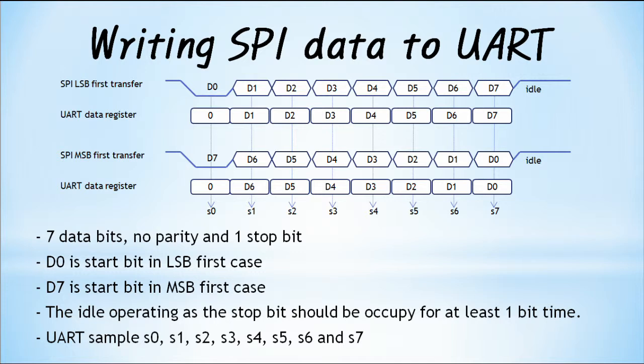Bit 0 is 0 and it operates as start bit, with bits 1 to 7 used as data bits to be transmitted. When MSB first is communicated, perform bit reverse and one bit shift right: bit 7 becomes 0 and operates as start bit, with bits 0 to 6 as data bits. An example of bit reverse is to convert 0b00001111 to 0b11110000.